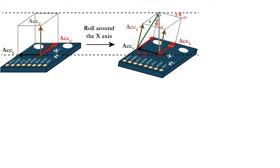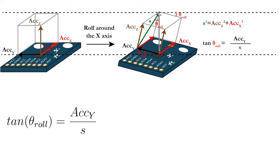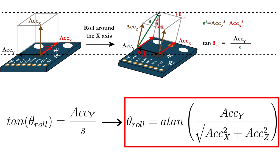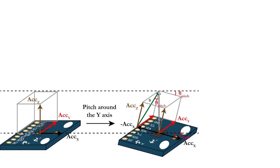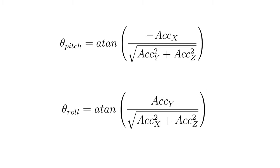Let's assume you roll around the x-axis until you reach the angle theta roll. To visualize this transformation, a box bounded by the x, y and z directions is sketched on the screen. From your basic trigonometry knowledge, you know that the tangent of the angle of a triangle is equal to the length of the opposite side divided by the length of the adjacent side. In the case of the angle theta roll, the length of the opposite side is equal to the acceleration in the y direction, and the length of the adjacent side can be calculated by the Pythagoras rule, finally giving you the equation to calculate the roll angle from the accelerometer values. A similar strategy can be applied for the pitch angles, giving you a second equation to calculate the pitch angle from the accelerometer values.